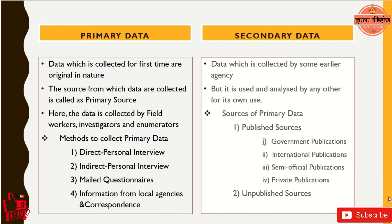Methods to collect primary data include direct personal interview, where a volunteer comes to us and asks about personal data. Indirect personal interview — the government can send volunteers to us to collect data. Also mailed questionnaires, if they are eligible to do this. However, the government has not widely used mailed questionnaires because of uncertainty of response or technical issues. Another method is information from local agencies and correspondents — if you have a big locality, a local agent will come and ask details, like insurance agents asking if people are interested in taking an insurance premium. Likewise, the government can collect data too.